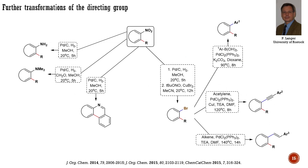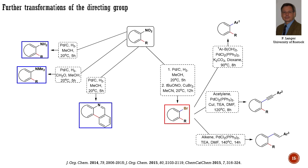For instance, the reduction of the nitro group under different conditions led to the formation of anilines, dimethylated anilines, and derivatives of phenanthridine. Additionally, the nitro group was transformed into a bromide, enabling the introduction of aryl, alkynyl, and alkynyl groups using Suzuki, Sonogashira, and Heck cross-coupling reactions, respectively.